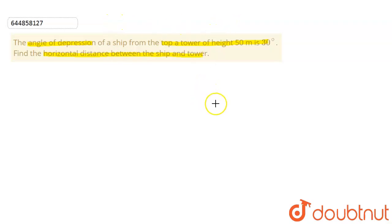Let's concentrate. So this is the tower of height 50 meters, and this is the angle of depression, and this is the base. So I have to find the horizontal distance between ship and the tower.